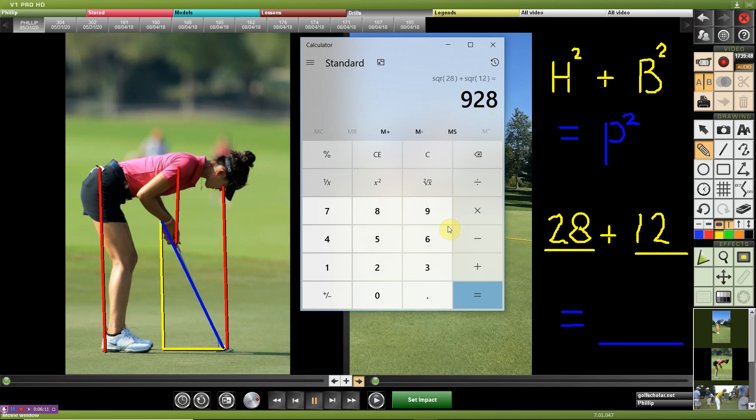So again, to find P squared, or her determined putter length, we need to find the inverse operation of that, which is the square root. So we'll take the square root of 928, for her, it's 30.4.